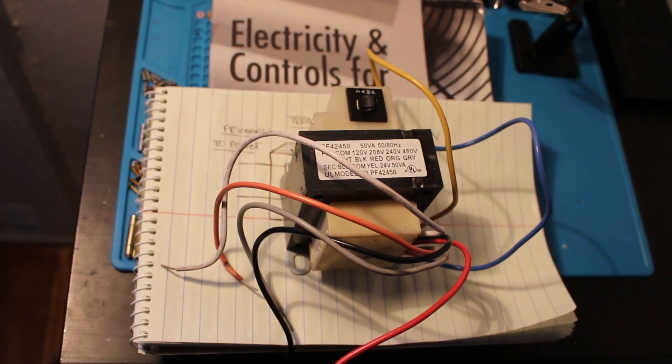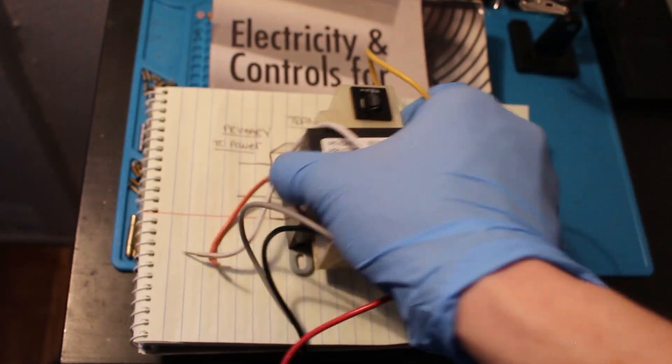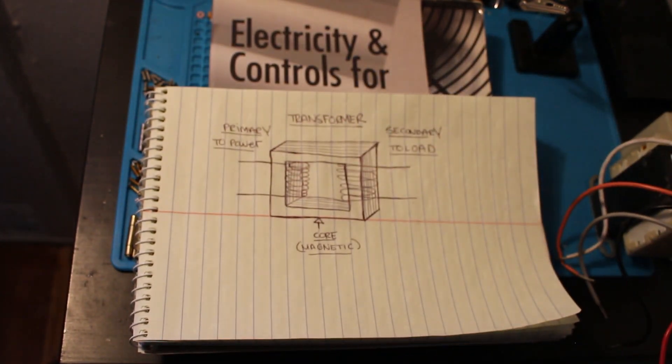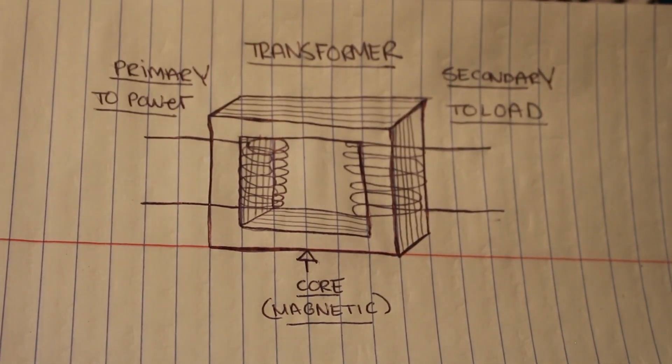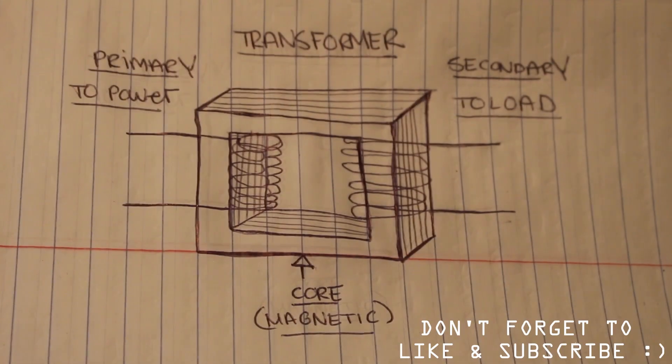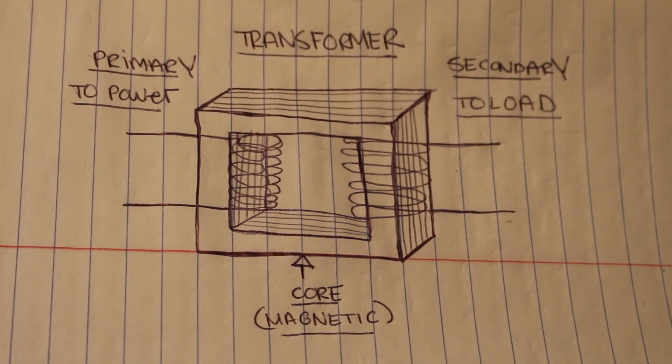With the mess of wires, for the first time it can be intimidating and confusing. So I drew you guys a picture to give you a clear understanding. We use transformers to energize our control circuit which runs on low voltage, typically 24 volts.